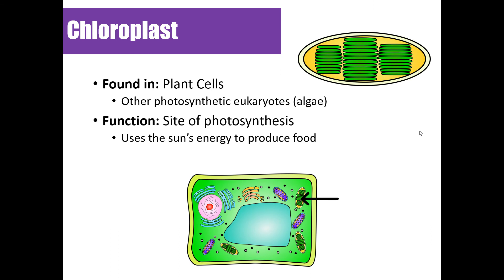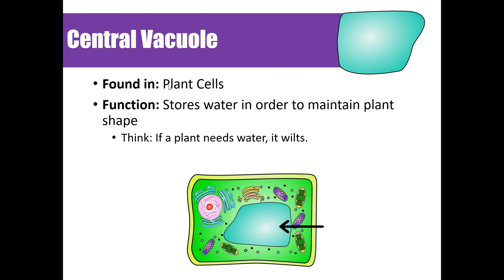The chloroplast, like the mitochondria, will be covered in more detail in unit three's energetics unit. For now, know that the chloroplast is found in plant cells and is the site of photosynthesis — where the plant uses energy from the sun to create sugar. The large central vacuole, found only in plant cells, stores water for the plant and also helps the plant maintain its shape.